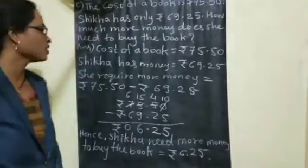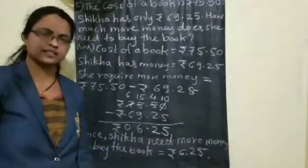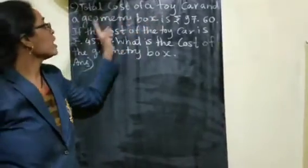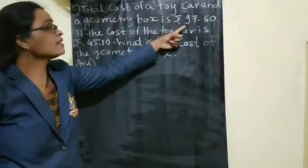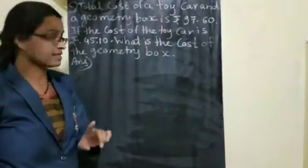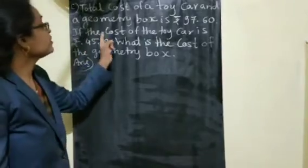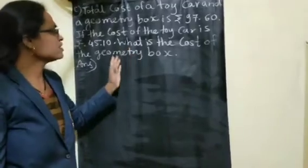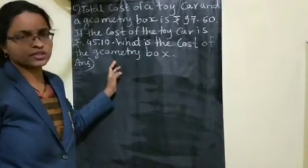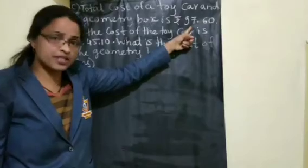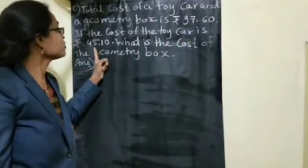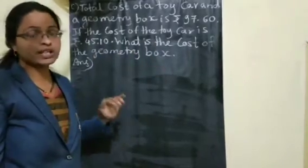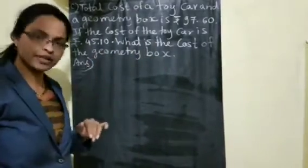Understood? Like this you have to write it. The next problem: the total cost of a toy car and geometry box together is rupees 97.60. If the cost of the toy car is rupees 45.10, then what is the cost of the geometry box? Total together cost is given as 97.60 and cost of toy car is 45.10 — if you subtract, the remaining answer will be the cost of the geometry box.